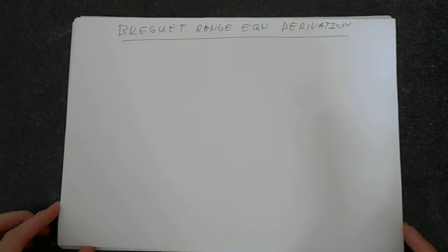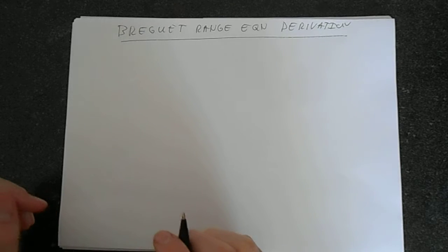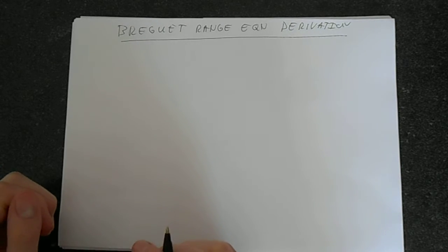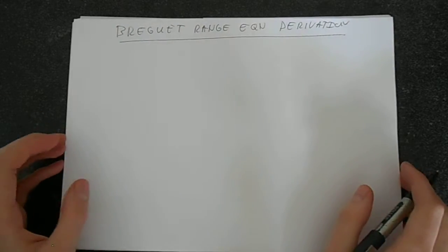In this video we're going to look at how to derive the Breguet range equation. Fundamentally, what we're going to start by doing is look at the change in weight. As an aircraft flies it burns fuel, therefore the weight decreases.